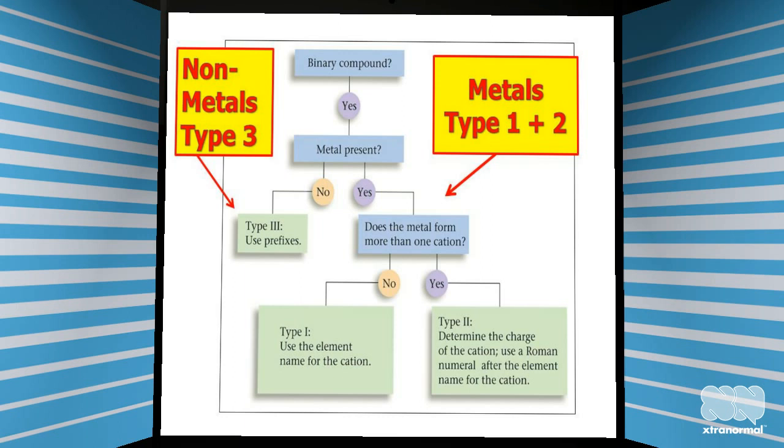I am confused about the three rules for naming. The rules depend on whether the compound contains a metal or not. If there is a metal present, you use type 1 or type 2 naming. And if you do not have a metal at all, you use type 3 naming.